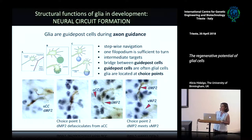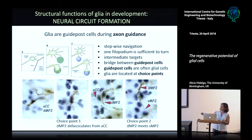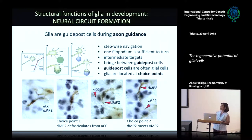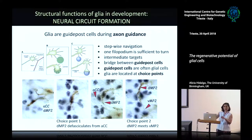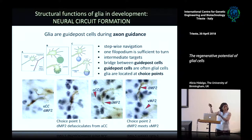Here you have the glia marked in black with a nuclear stain called Repo, and here you have the axons. These axons are an interneuron called DMP2 and a motoneuron called ACC. They're traveling together, and then they meet a glial cell at a choice point position where the axons start separating. The motoneuron will go out to the periphery and the interneuron will stay in — it's these glial cells at this choice point that triggered the separation. In another example, two interneuron axons meet glia, form the first fascicle, and carry on to form a longitudinal fascicle. So glial cells are very important in axon guidance.